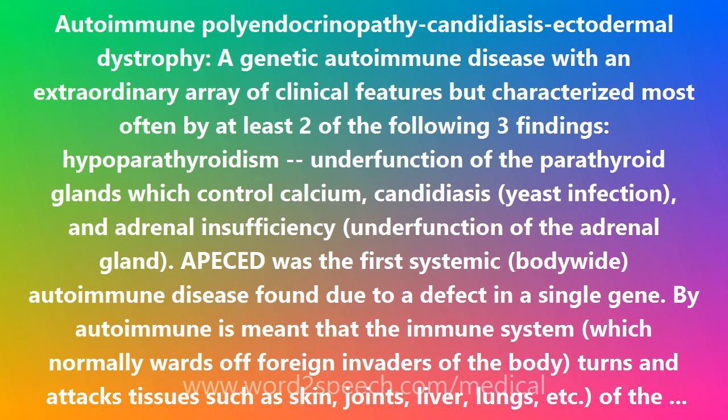In 1997, a novel gene was identified that mapped to chromosome region 21q22.3. The gene was named AIRE for autoimmune regulator. Changes in the AIRE gene are responsible for APECED.